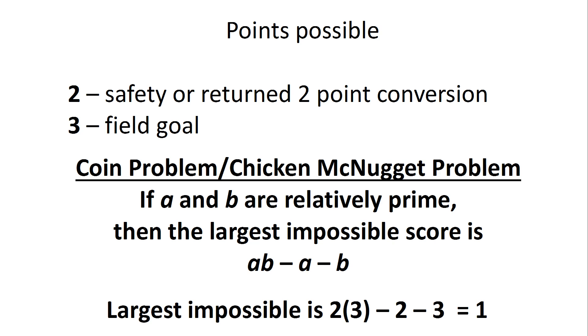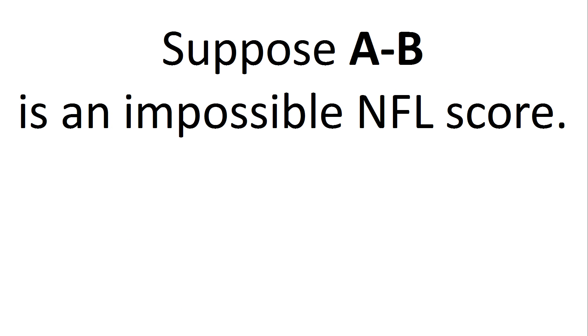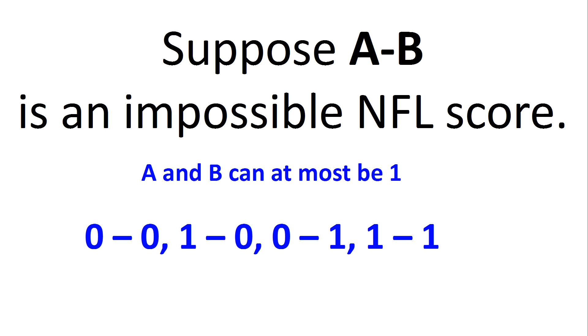So that means the largest point total that cannot be achieved is 1. So if one team scores A and another team scores B, we know that A and B can at most be 1. We could also have 0.